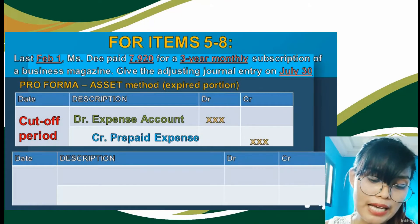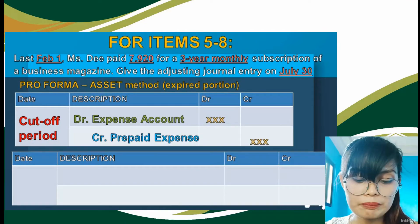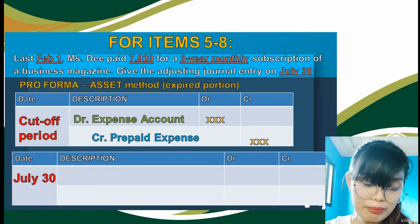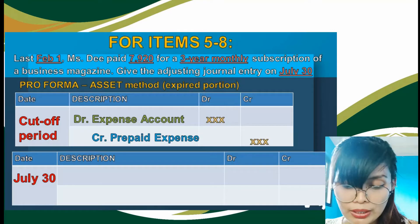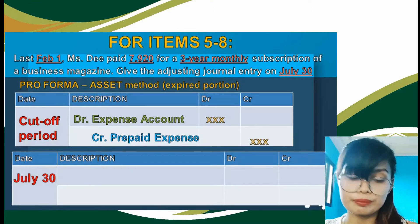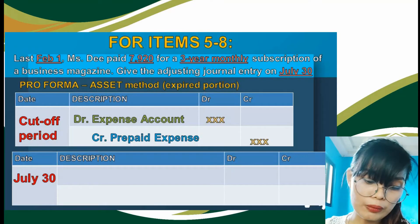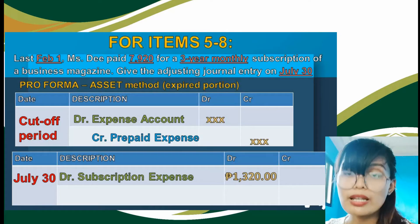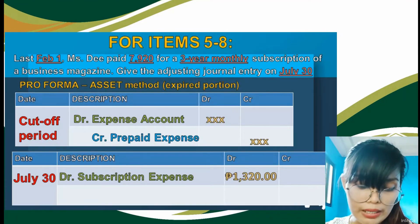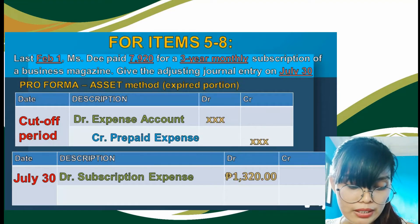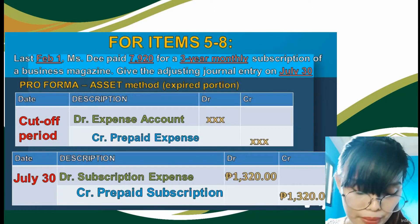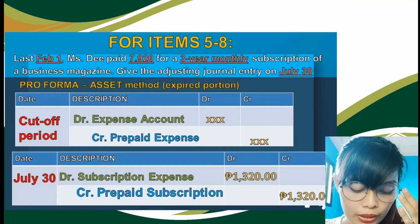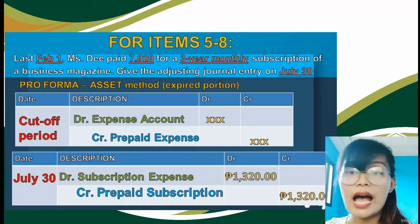For the asset method pro forma: debit expense account, credit prepaid expense. Cut-off date is July 30. Since MISD paid for a subscription, our adjusting entry is: debit subscription expense P1,320 and credit prepaid subscription P1,320. That is our adjusting entry for this transaction under the asset method.